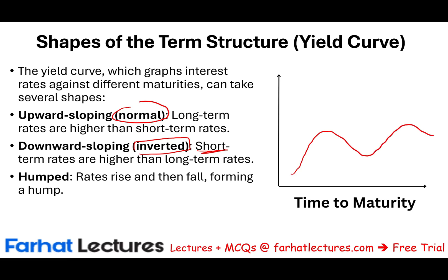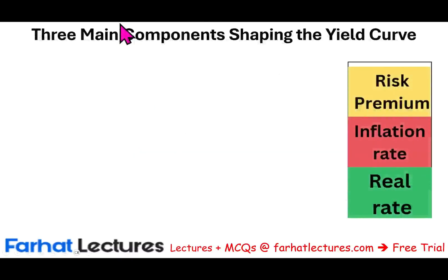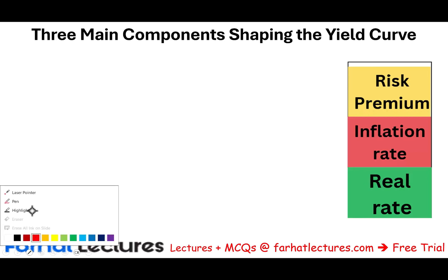Usually we would use the U.S. Treasury bond — such as the 30-year U.S. Treasury bond — or some risk-free rate to graph this. However, it's important to understand what composes an interest rate when a nominal interest rate is quoted. Let's look at the three main components that shape the yield curve.